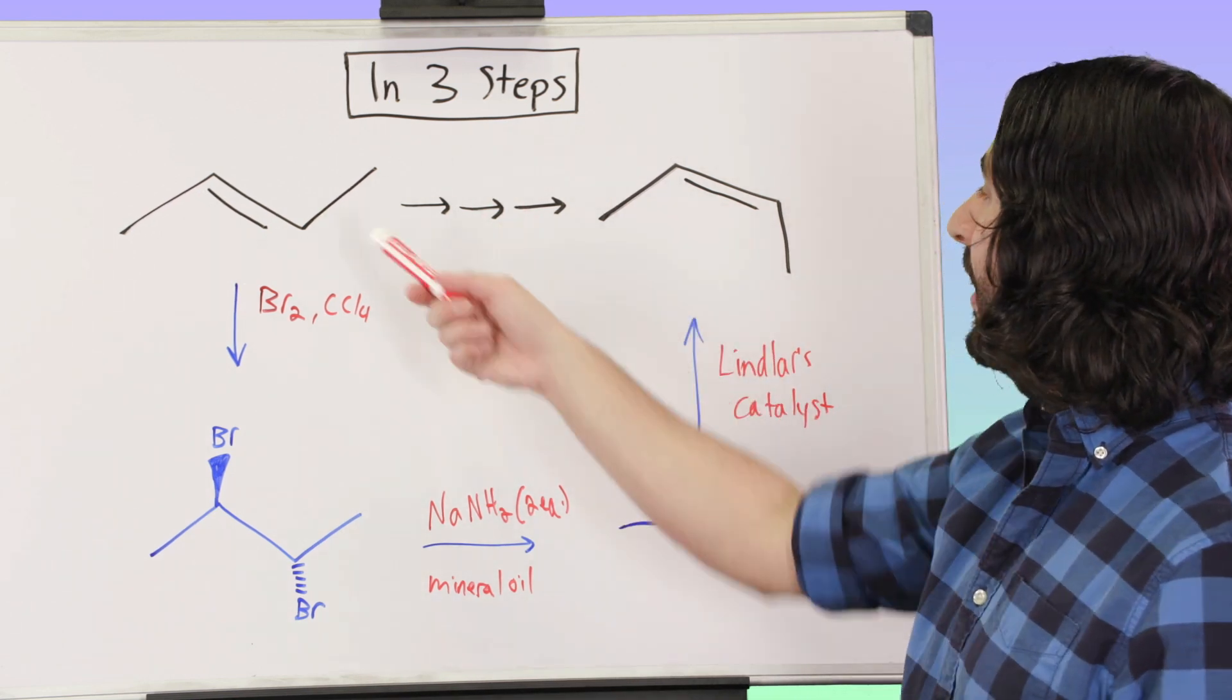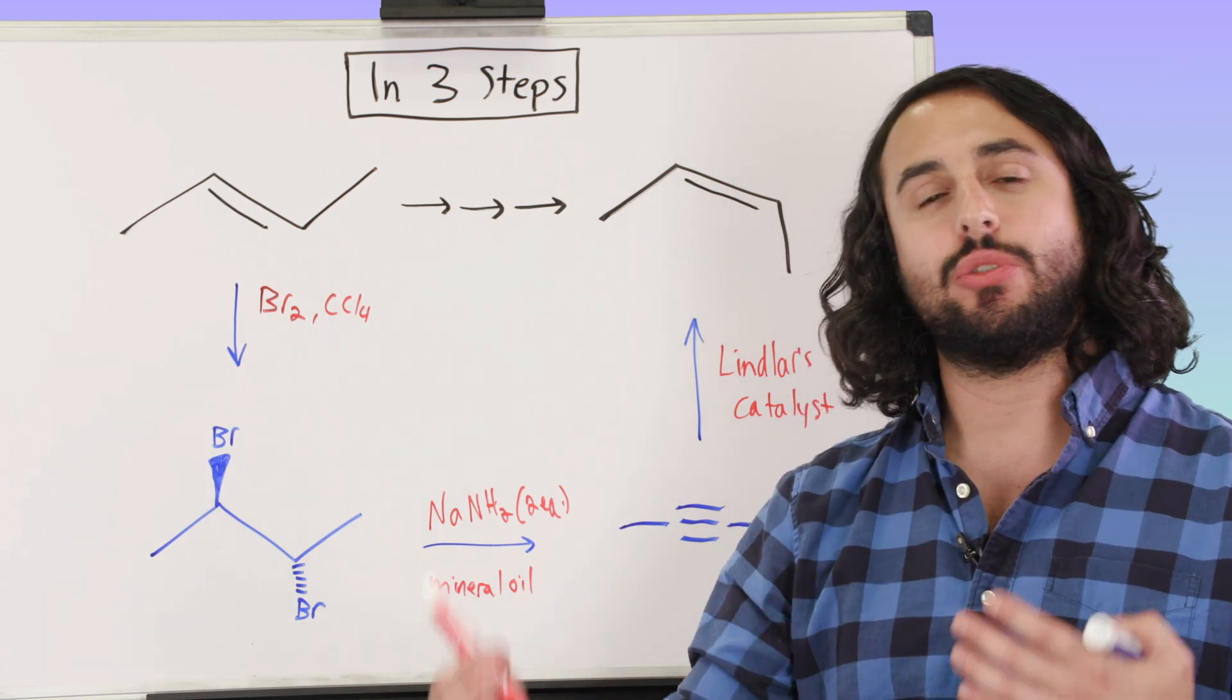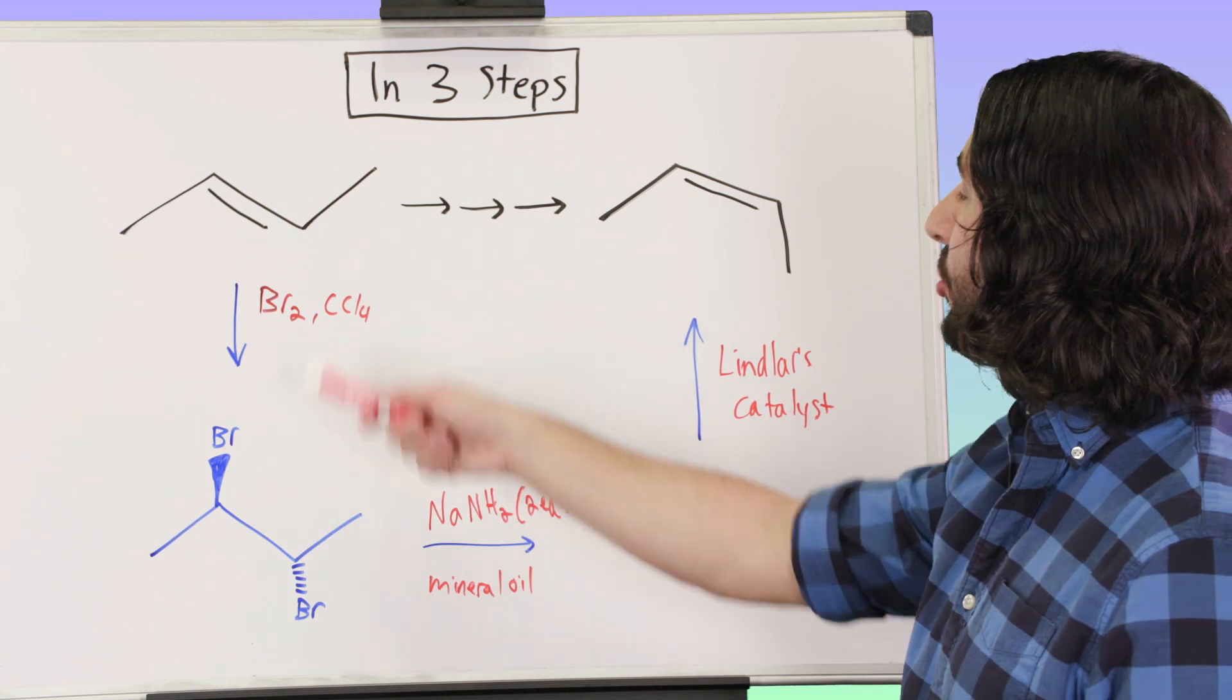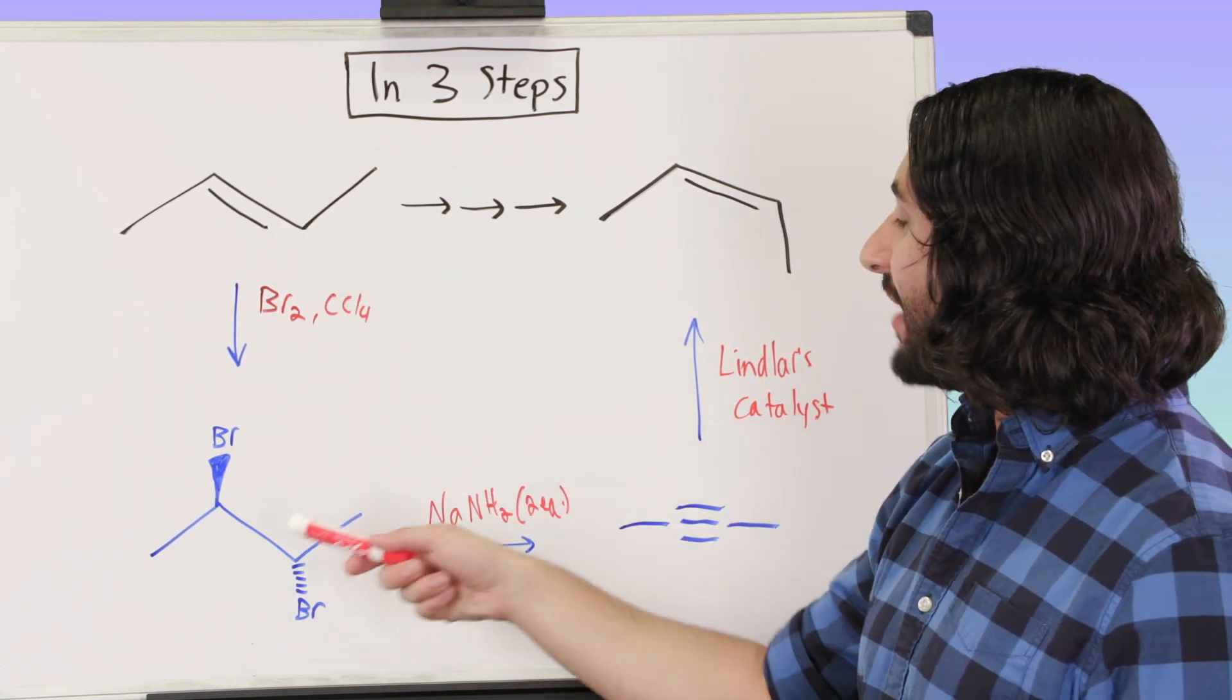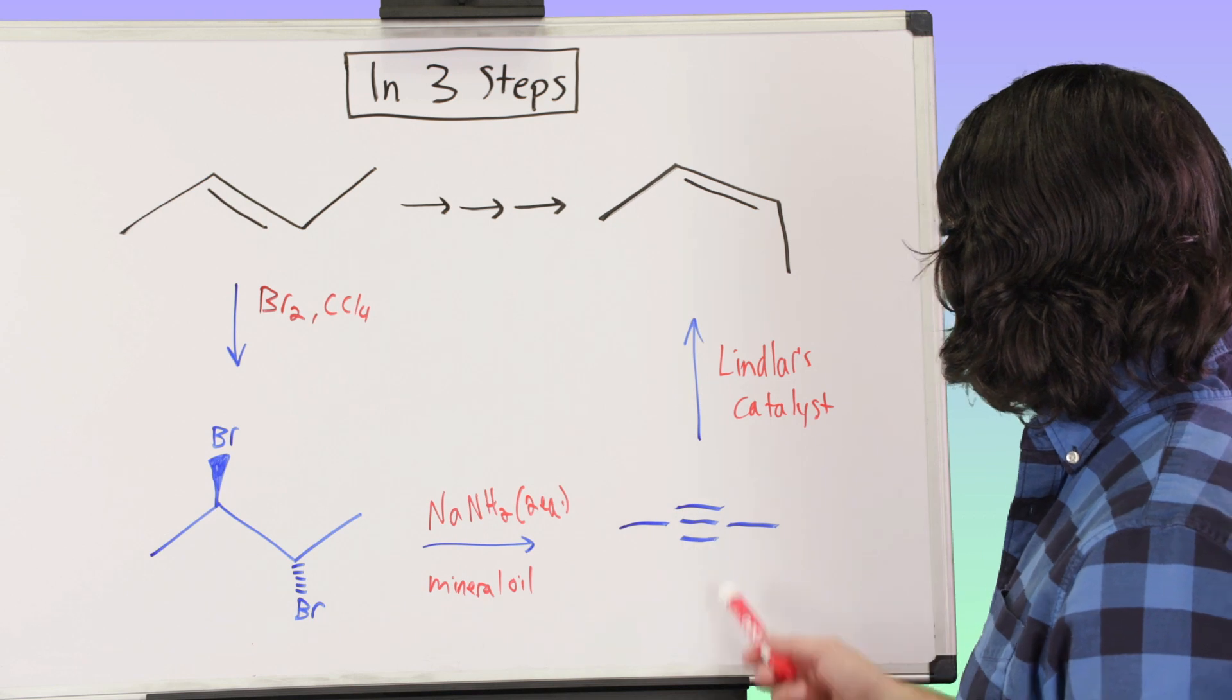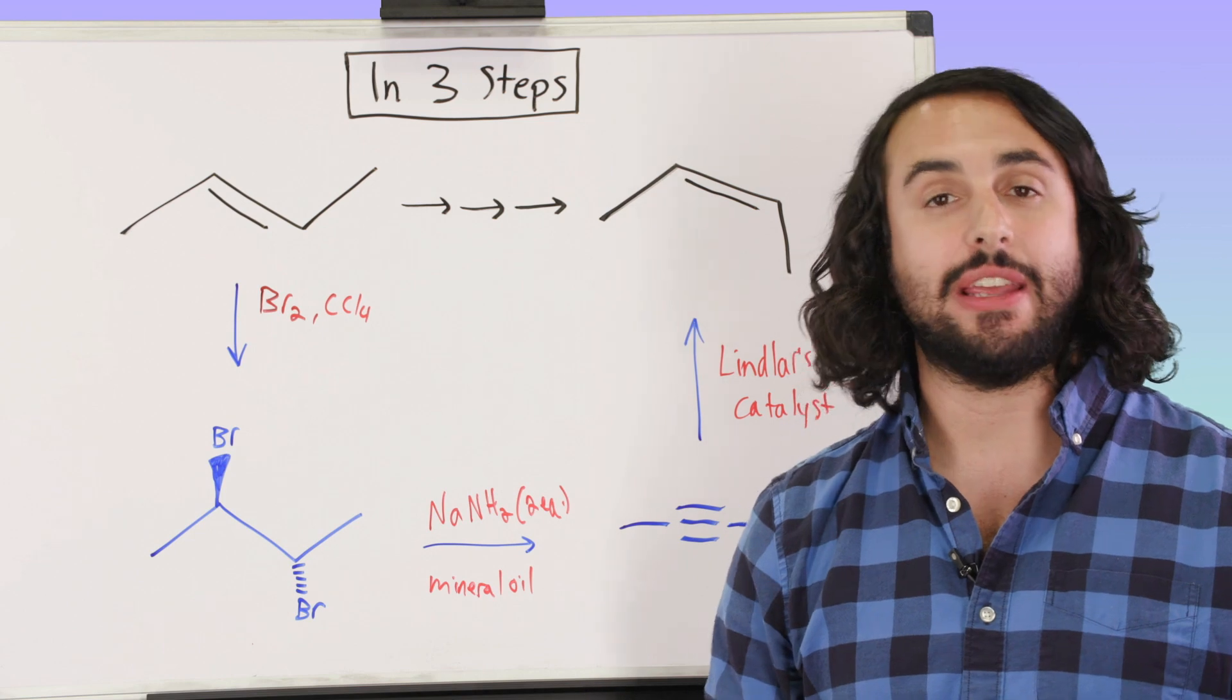Lindlar's catalyst is going to selectively hydrogenate the alkyne to the Z-alkene. This is an excellent little problem - looking at something where we haven't done very much, but having to sift through our toolkit of reactions to figure out a strategy. We've got dihalogenation, then elimination twice to get the alkyne, and then Lindlar's catalyst to get us to the Z-alkene.